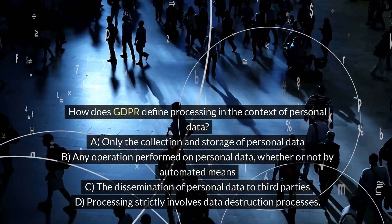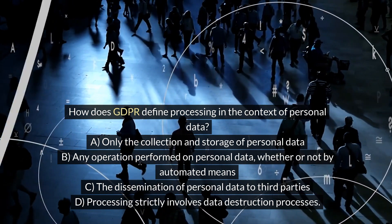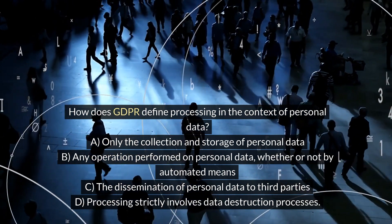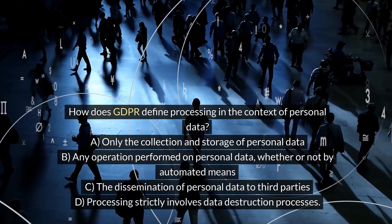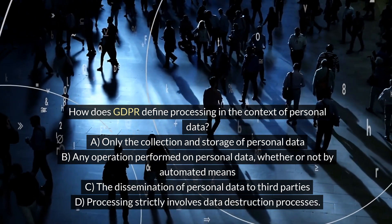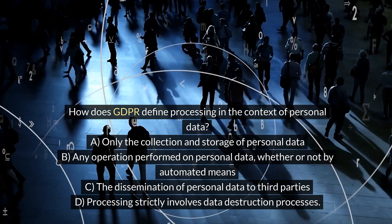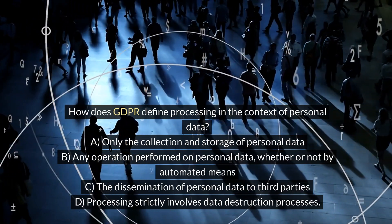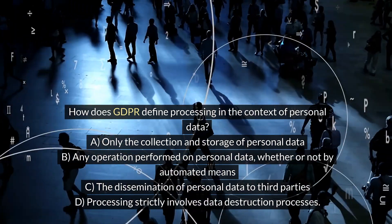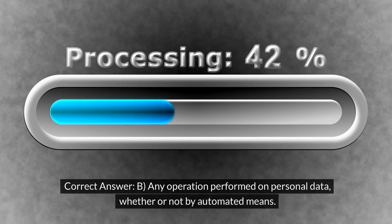How does GDPR define processing in the context of personal data? A. Only the collection and storage of personal data. B. Any operation performed on personal data, whether or not by automated means. C. The dissemination of personal data to third parties. D. Processing strictly involves data destruction processes. Correct answer: B. Any operation performed on personal data, whether or not by automated means.